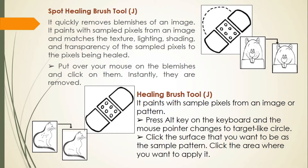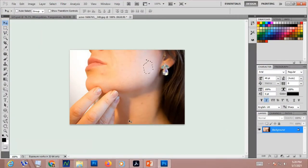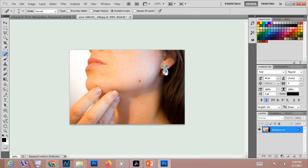The spot healing brush tool quickly removes blemishes of an image. It paints with sample pixels from the image — just put your mouse over the blemishes and click on them; instantly they are removed. To use it, simply click the spot healing brush tool, then brush over that certain part and it will be removed.